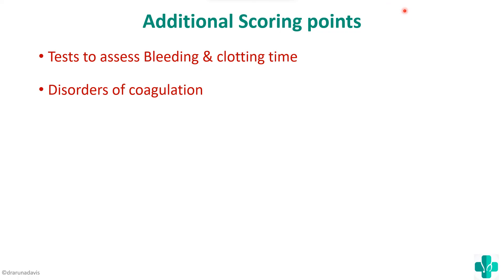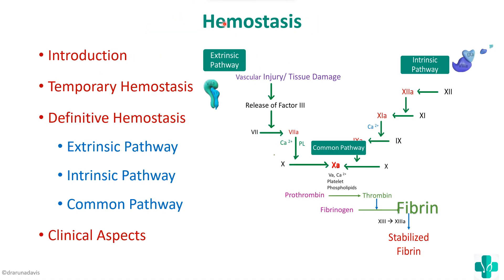For additional scoring points, you can also write about tests to assess bleeding time and clotting time, like PT and APTT, and which test is used to measure the efficiency of which pathway. You can also write about disorders of coagulation like hemophilia to score more marks. In summary, start with the definition, write about temporary hemostasis and platelet plug formation, then definitive hemostasis covering the extrinsic, intrinsic, and common pathways, finish with clinical aspects, and don't forget to draw a schematic diagram showing the different steps of hemostasis.